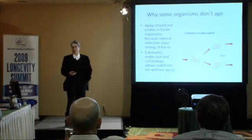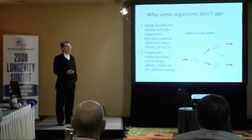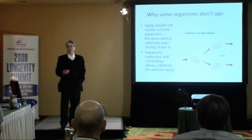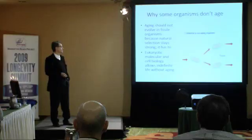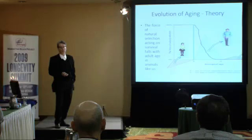Evolution therefore gets rid of the problem of aging. And what this tells those of us who are evolutionary biologists is that the molecular and cell biology of eukaryotic cells has nothing to do with the fundamental cause of aging whatsoever — not telomeres, not metabolic damage, none of those things. All of those are things that evolution can readily solve.